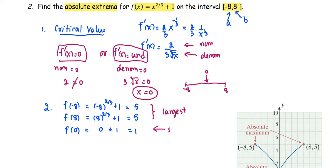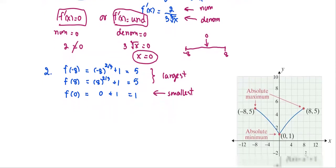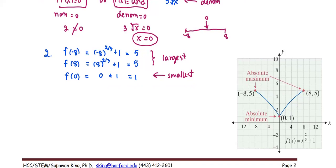And the smallest occurs at x equals zero. That you see in the graph. Step three, we're going to wrap up, summarize it.